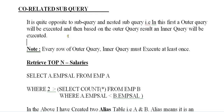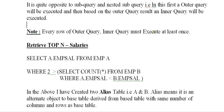A correlated subquery is said to be the opposite of a regular subquery. In a correlated subquery, the outer query is executed first, and based on the outer query results, the inner query is executed. Every row of the outer query must be evaluated at least once.